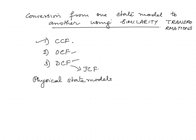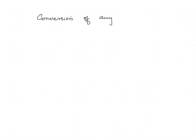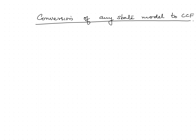We have already seen what a similarity transformation is. Let us consider conversion to CCF first. For conversion of any state model to CCF, the basic idea is using a linear transformation. Let us start with a state model: ẋ = Ax + Bu and y = Cx + Du.